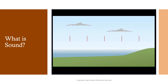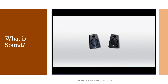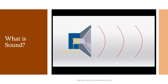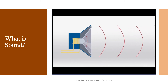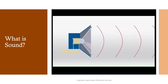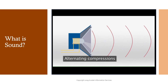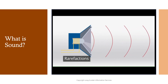Sound works the same way. A speaker is a common source of sound waves. Electrical impulses are sent from an amplifier to the flexible cone in the speaker, and the cone begins to vibrate. As the cone pushes forward, it compresses the air molecules in front of it. The cone then retracts, creating an area of rarefied air in front of the speaker. These alternating compressions and rarefactions create a series of sound waves.